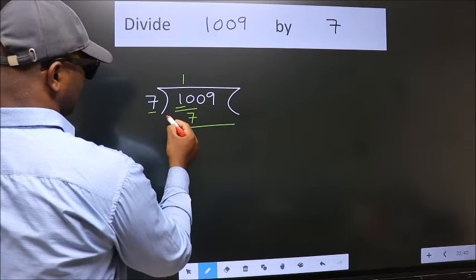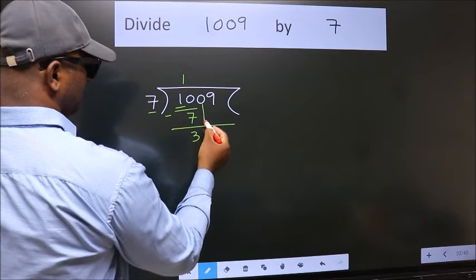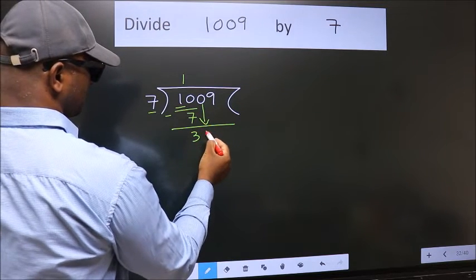Now we should subtract. We get 3. After this, bring down the beside number. So 0 down.